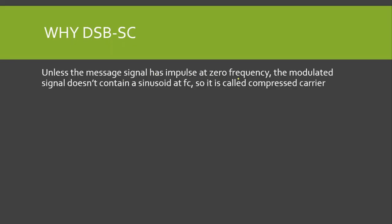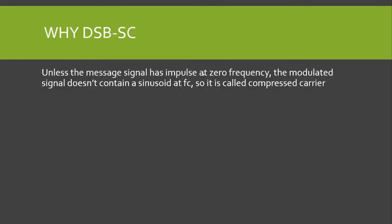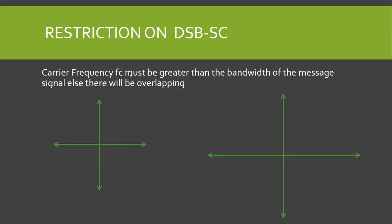The reason it is called suppressed carrier is that unless the message signal has an impulse at zero frequency, the modulated signal does not contain a sinusoid at fc. Therefore the spectrum of DSB-SC does not have impulses at ±fc — there is no impulse at −fc or +fc — which is why it is called double sideband suppressed carrier.